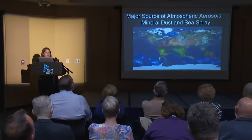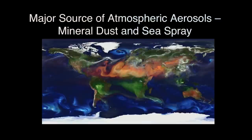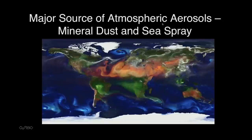Two major sources of atmospheric aerosols are mineral dust and sea spray. Mineral dust comes from dust storms — here is a simulation showing a brown cloud from Africa forming a global dust belt due to large desert regions like the Saharan and Gobi deserts. And 71% of the earth's surface is covered with oceans, so a lot of aerosols come from the ocean as sea spray. Both mineral dust and sea spray are areas my group at UC San Diego is very interested in.